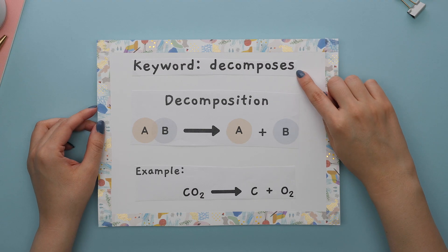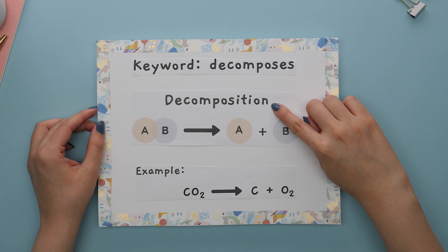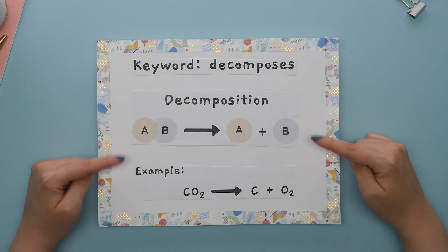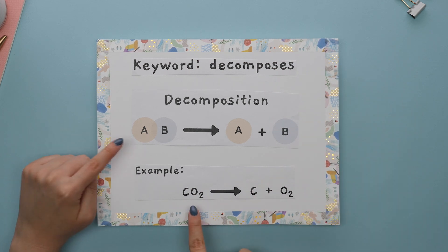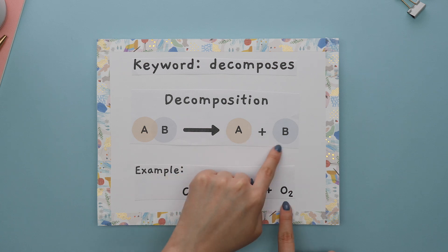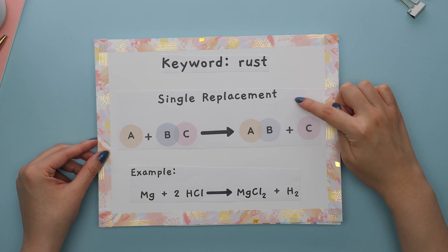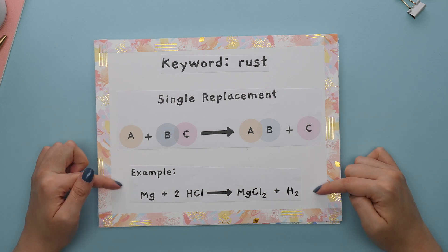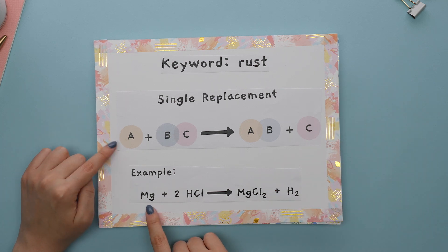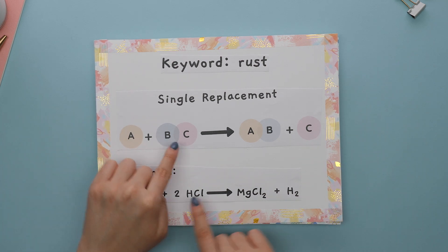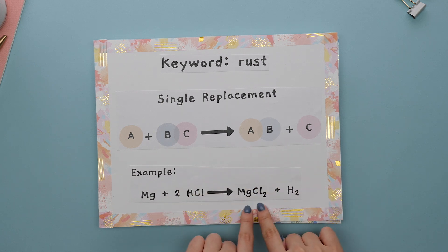And the last part of this is knowing your types of chemical reactions. Some keywords here are decomposes, which relates to a decomposition reaction, which looks like this, where a compound is being broken down to multiple products. The word rust can hint that this is a single replacement reaction, which looks like this, where one single element replaces another element in a compound to form a new compound plus an element.